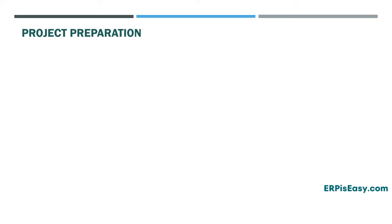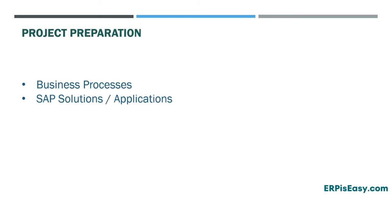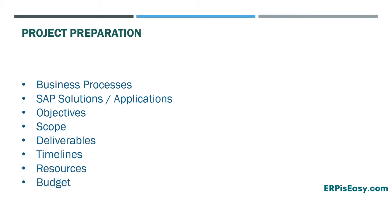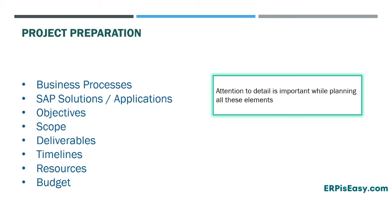So what happens during the project preparation phase? This is where the project starts and this is where detailed planning is done. Business processes, solutions that are required to adapt the business processes, objectives, scope, deliverables, timelines, resources, and budget — all these things are planned during this phase. This is the most crucial phase of an SAP project and attention to detail is very important, as that will determine the success or failure of the project. Every small and big element must be proactively approached, discussed, and taken into consideration while planning.